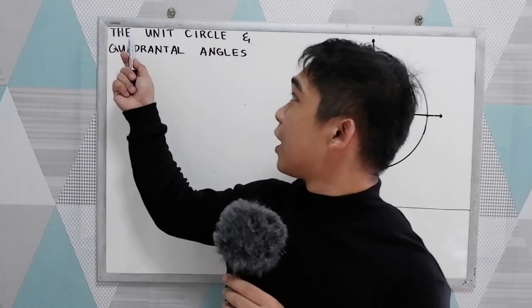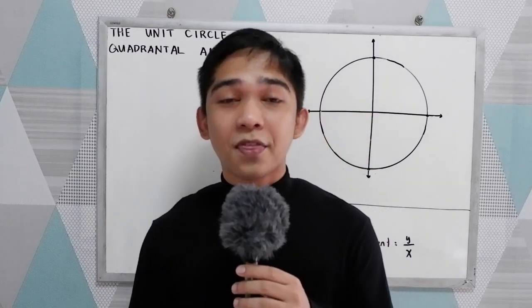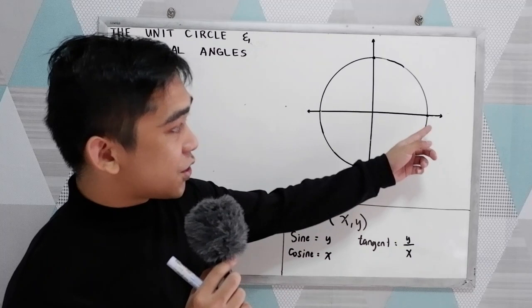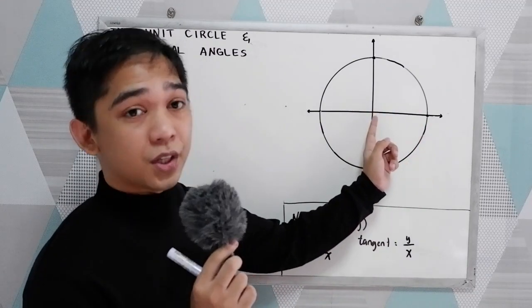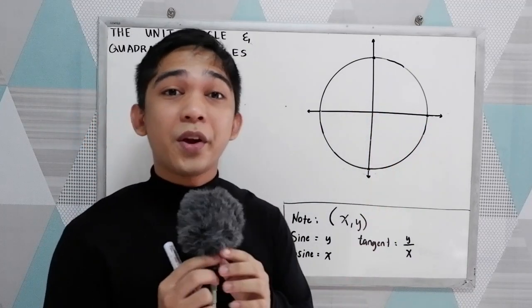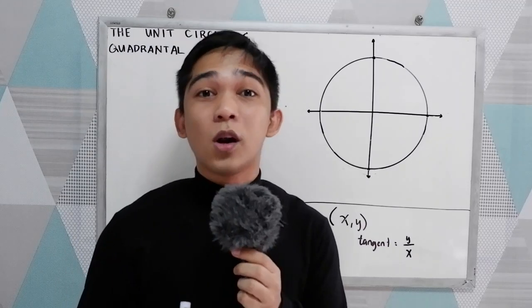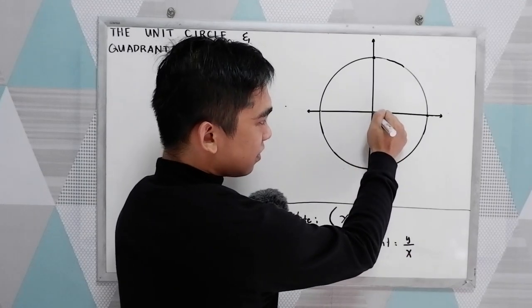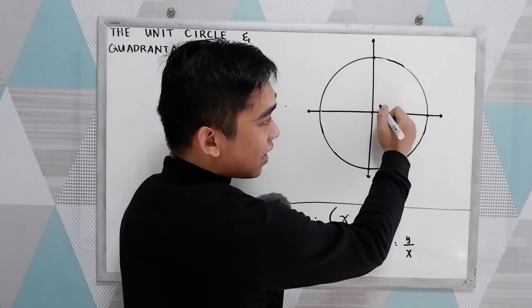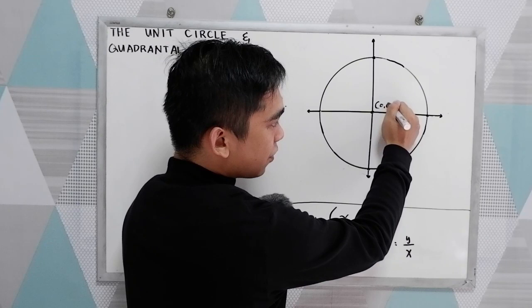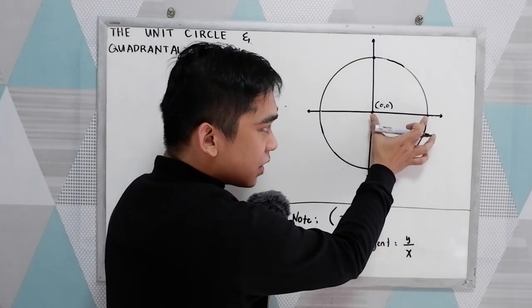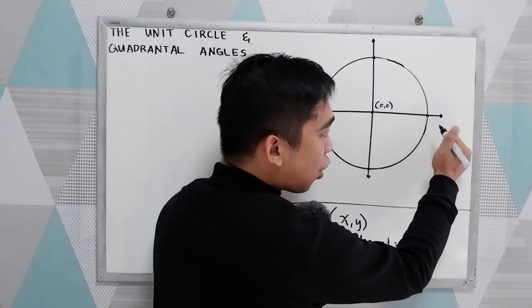Good day everyone. Today we will be discussing the unit circle and the quadrantal angles. When we say unit circle, it is a circle centered at the origin with the radius equal to 1. So circle centered at the origin — our origin has a coordinate of 0, 0 — with radius equal to 1. So if our radius is 1, we can get the following coordinates.